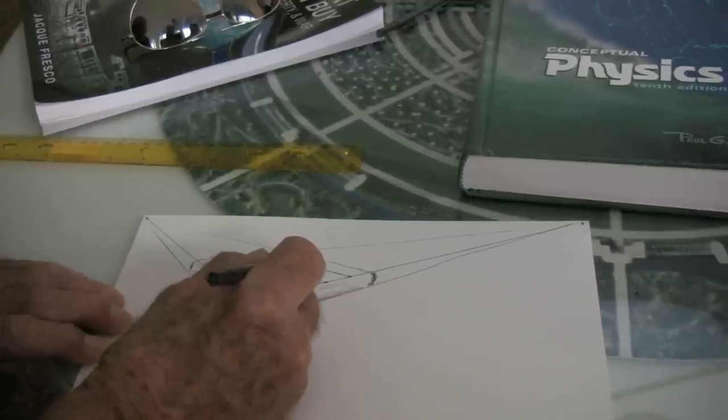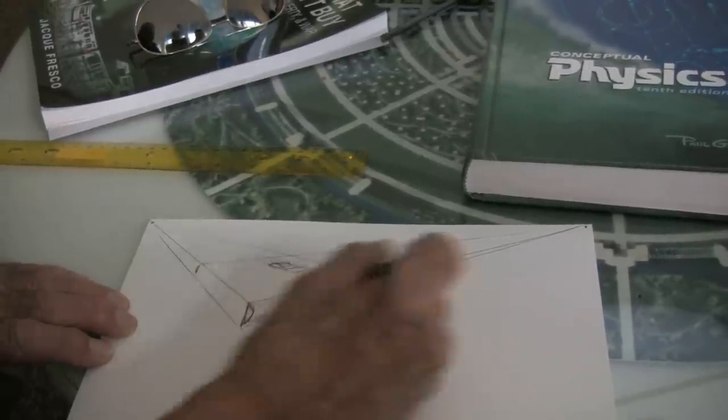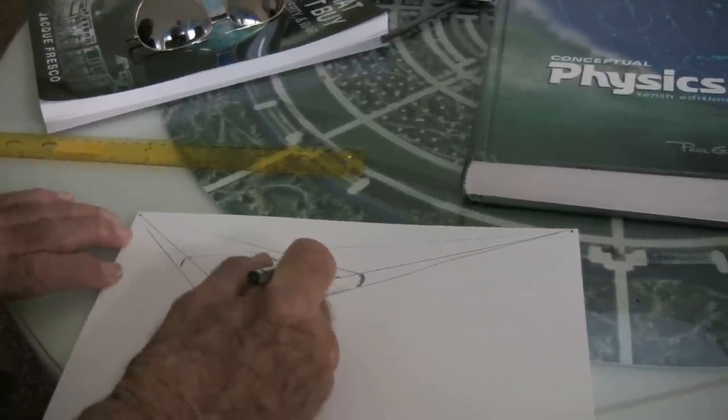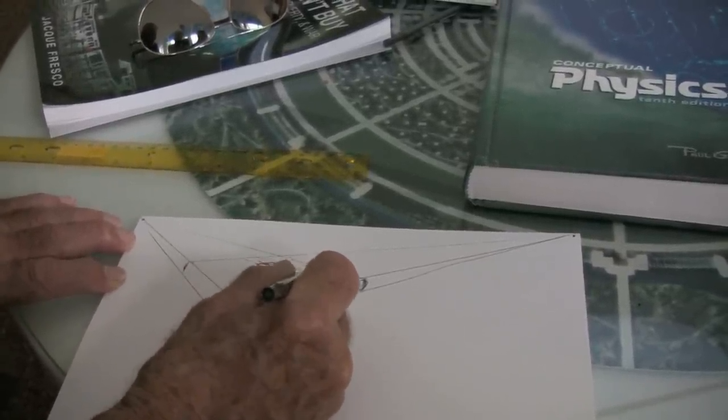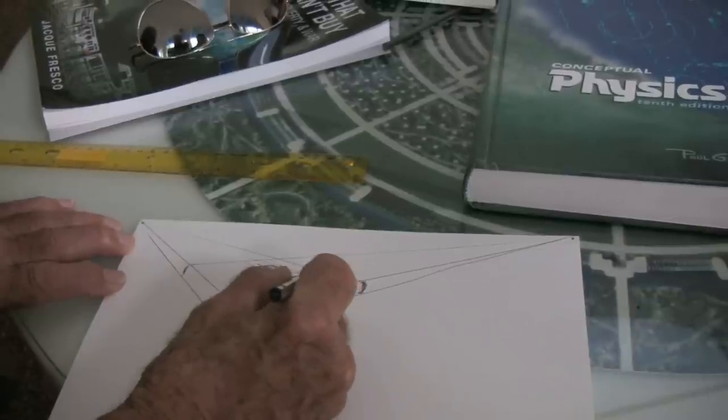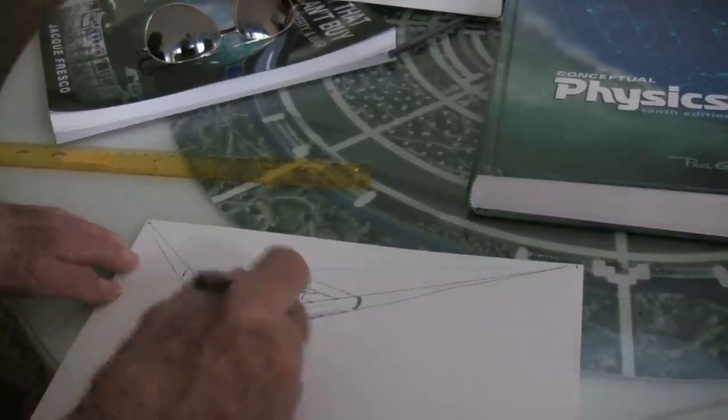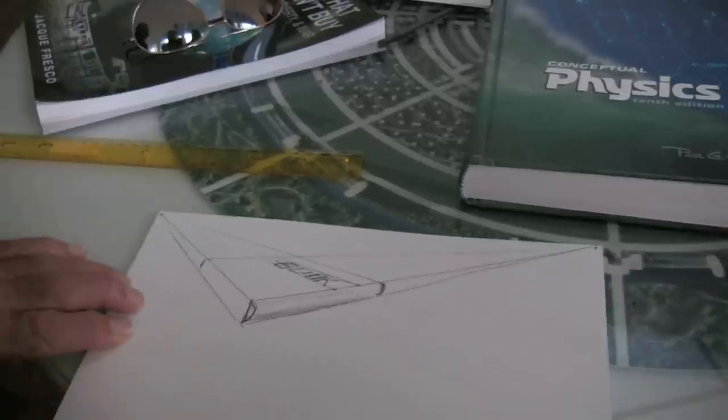O, O. All going to the vanishing point, all these lines. Now the K. If it doesn't go to the vanishing point, it won't look right. So the K hits that line, and this hits that line. B-O-O-K. Do you see that?